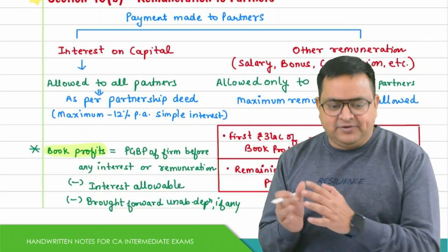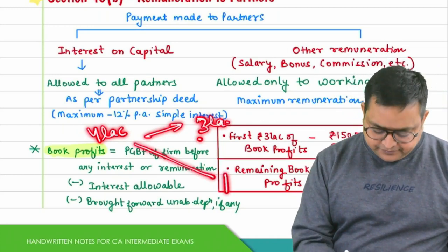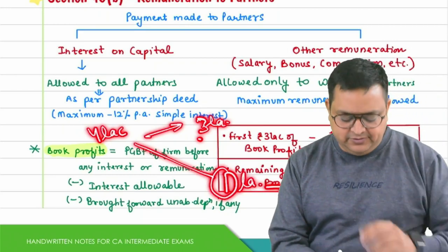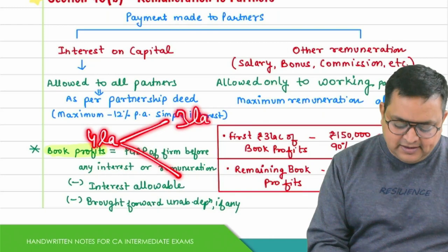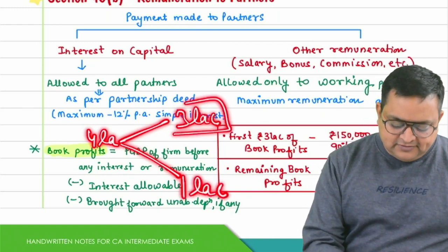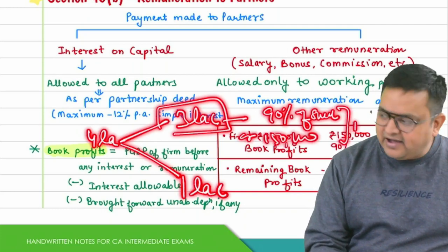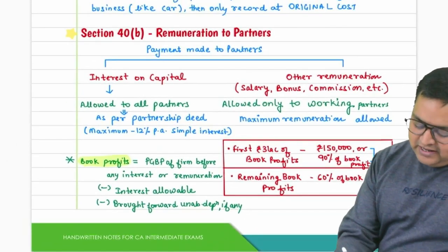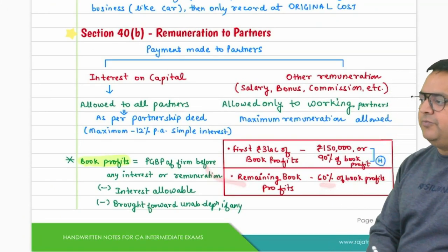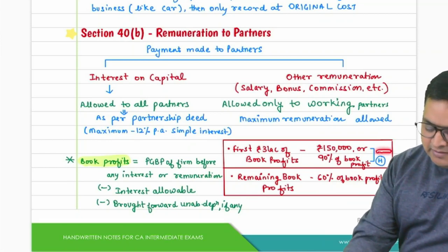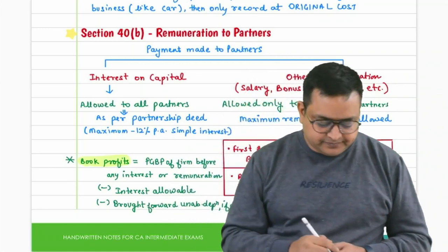Once book profits are computed, segregate the first ₹3 lakh and the remaining amount. On the first ₹3 lakh: maximum remuneration = 90% of such book profits or ₹1,50,000, whichever is higher. On the remaining book profits: maximum remuneration = 60% of such book profits. Adding both gives the maximum remuneration allowable to partners.